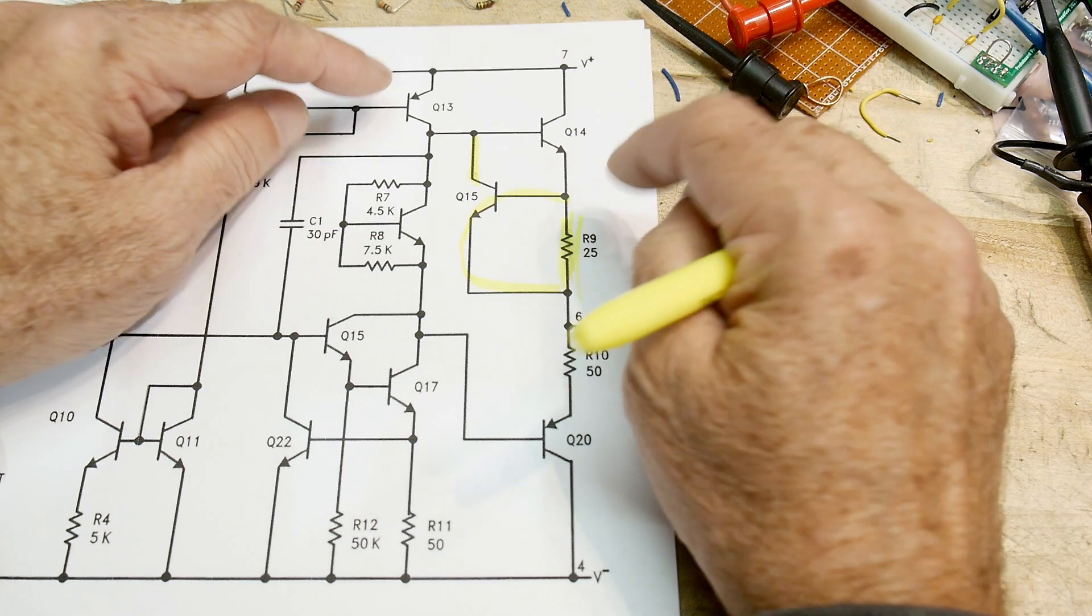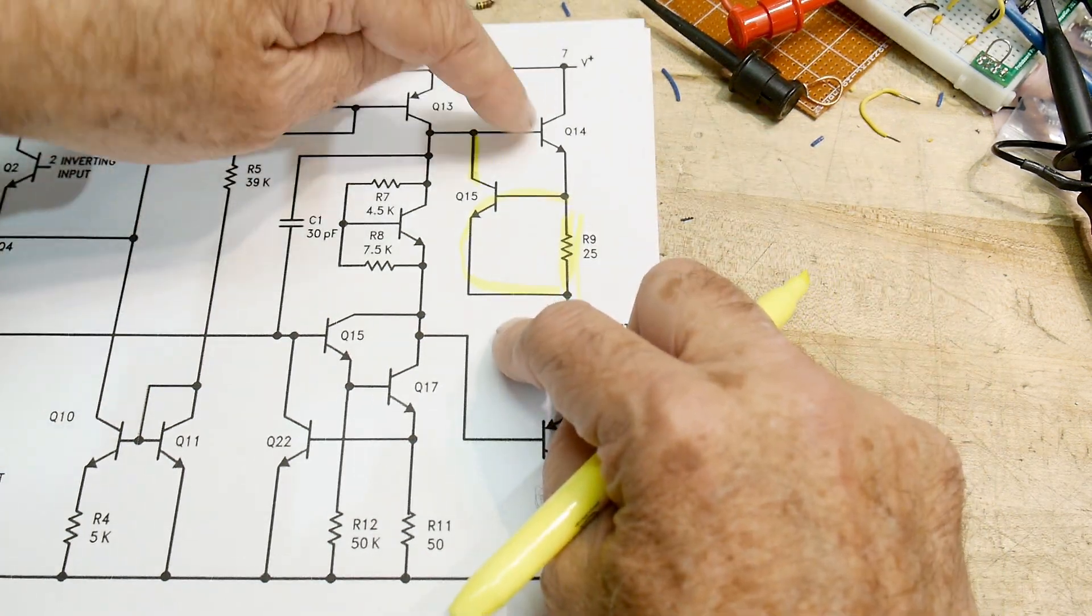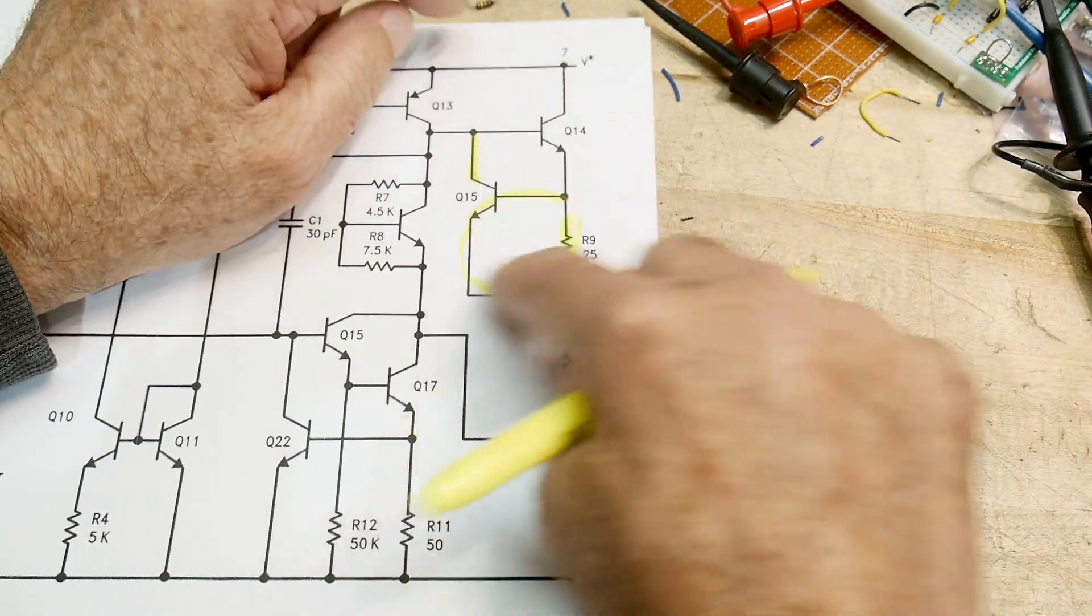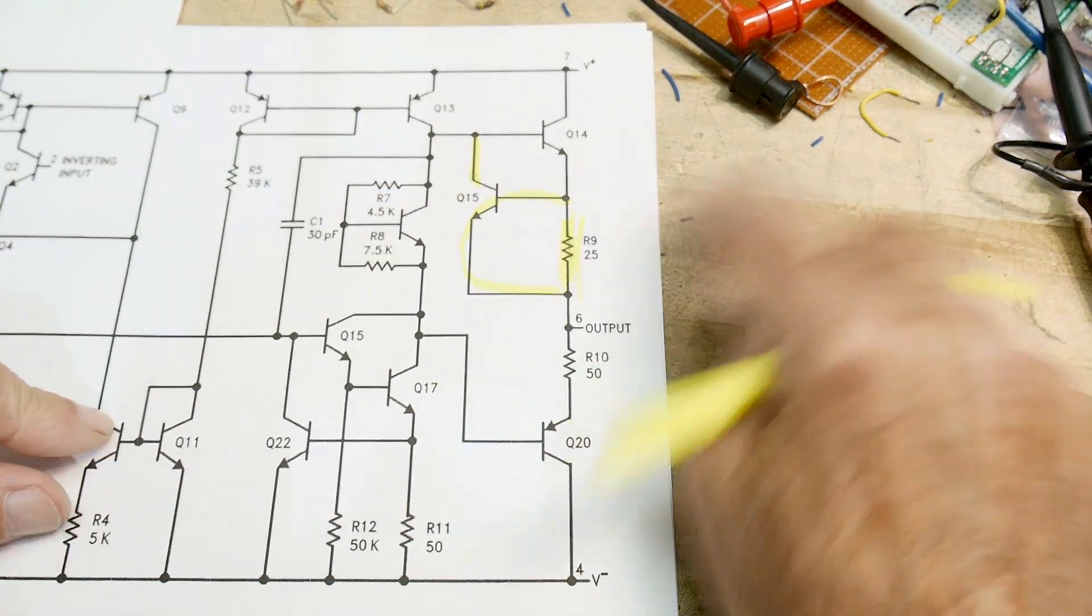And then it'll pull down on this. This has to be high in order for that to be on, so this is a way for it to turn off. So this is a short circuit protection.